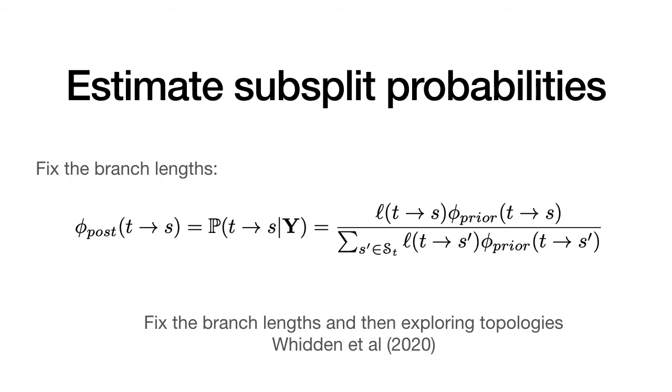We can now fix the branch length and estimate the subsplit probabilities conditioned on the observed data. We take a Bayesian approach, where we initialize the subsplit parameters such that they define uniform distribution over the topologies. Then, we can use the per-PCSP composite likelihood in place of the exact marginal likelihood to update the subsplit parameters. Note that this approach of fixing the branch length and then exploring the topologies has been shown to be effective in Whidden et al. And we are adopting a similar strategy here. We fix the branch length and then we estimate the uncertainty in the trees via subsplit parameters.